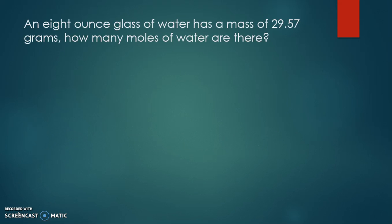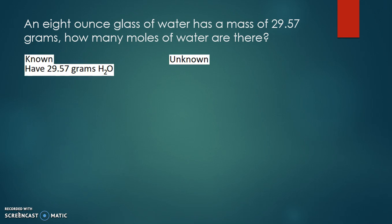Here we have an 8-ounce glass of water with a mass of 29.57 grams. How many moles of water are there? Let's analyze and list out what we know and what we don't know. We know we have 29.57 grams of water and we're trying to find out how many moles of water there are. What relates grams of water to moles of water is molar mass.